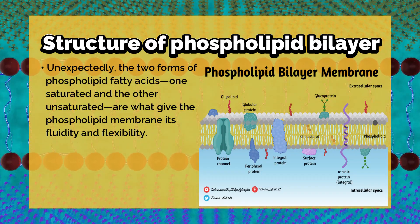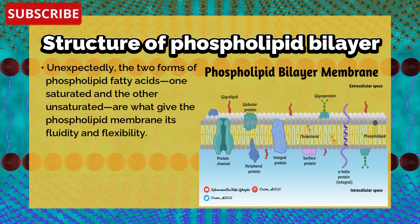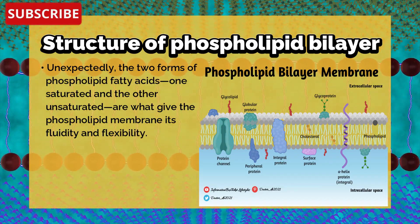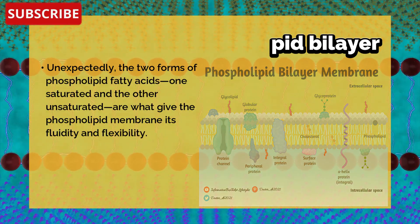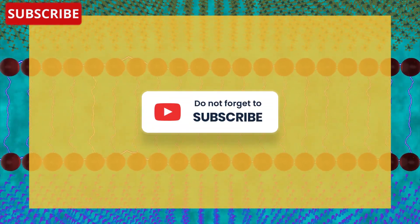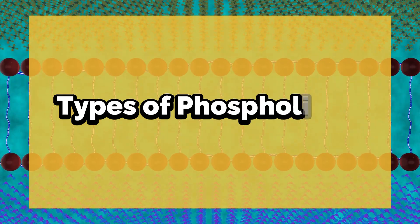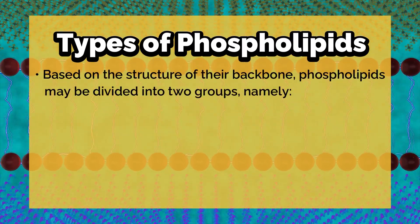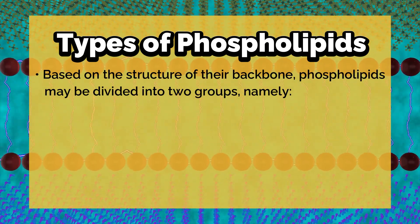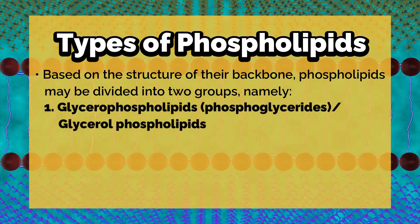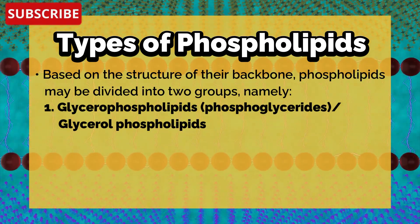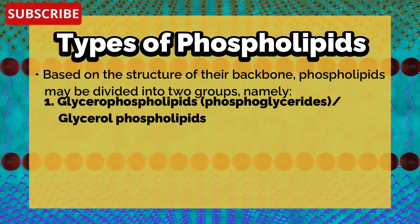One saturated and the other unsaturated fatty acid form of phospholipids are what give the phospholipid membrane its fluidity and flexibility. Next, we will learn the types of phospholipids. Based on the structure of their backbone, phospholipids may be divided into two groups. First: glycerophospholipids, also known as phosphoglycerides, whose structural component is glycerol.